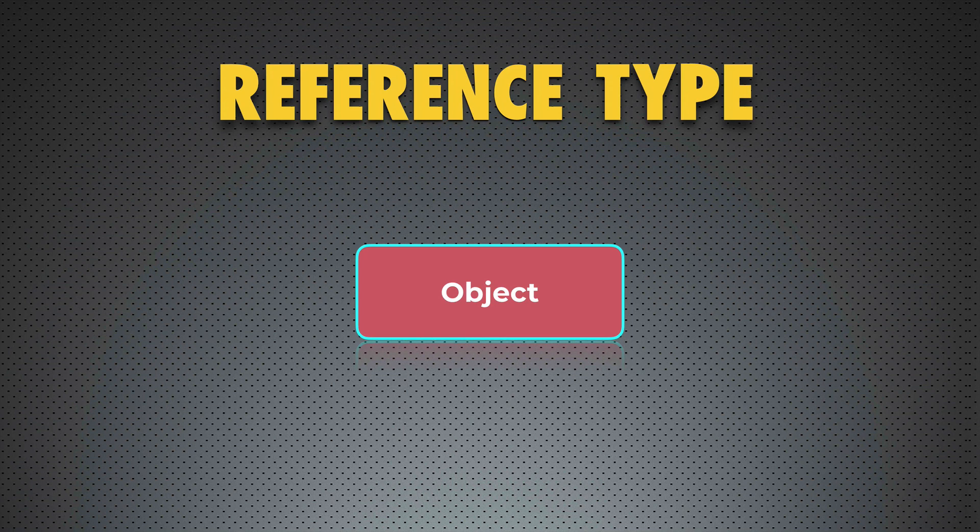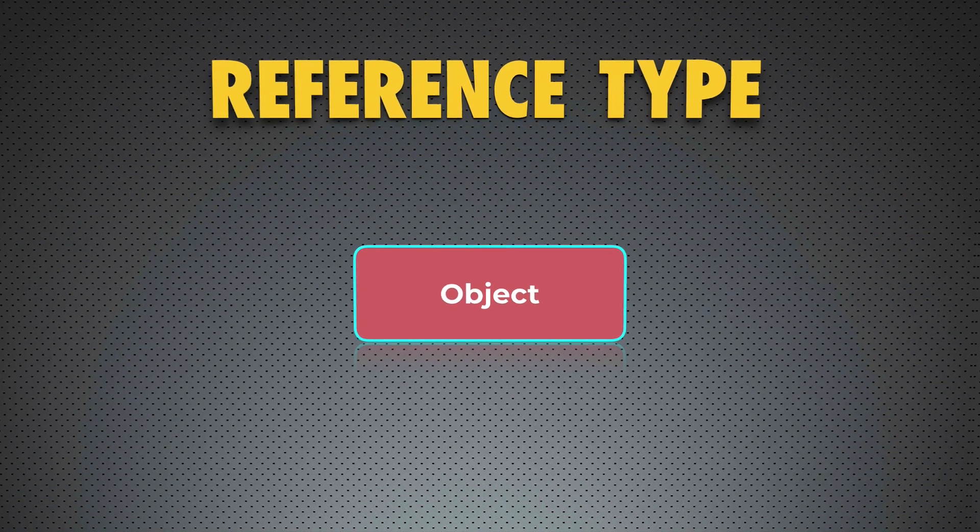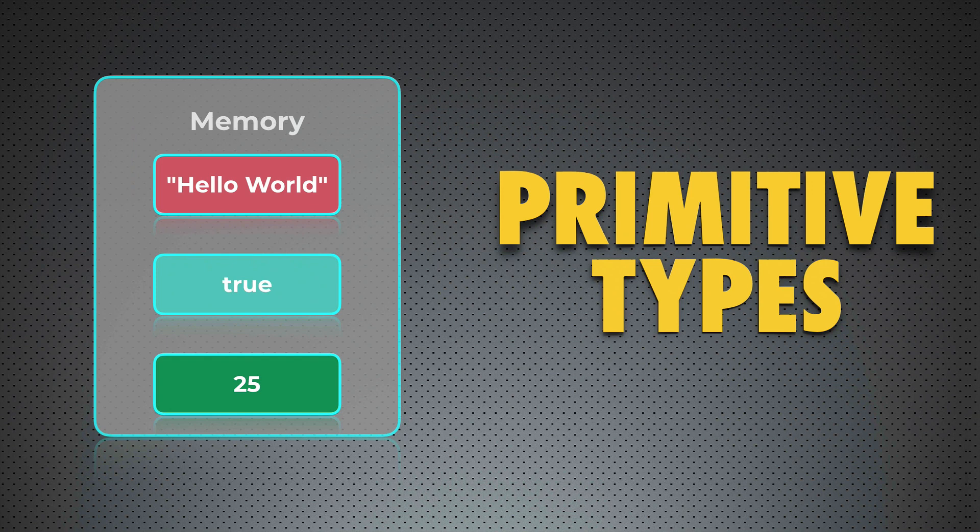Let's now look at the difference between primitive value types and reference type. And let's first look at primitive types. Here on the left you see memory. And each value is stored in the memory. Each value of six primitive value types in JavaScript is stored in the memory in the separate cell. So here is, for example, string hello world.